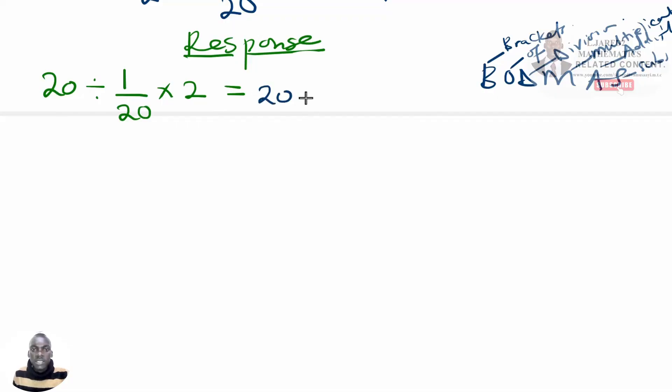So we have 20 divided by 1 out of 20 multiplied by 2. So when we reverse the BODMAS, it says that we begin dealing with the brackets, but here we don't have the brackets, so we leave it out.